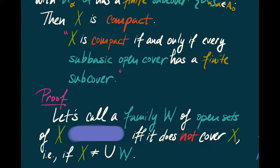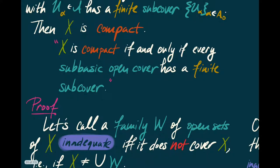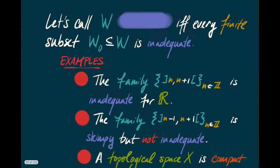We need a couple of words to make our argument clear. We'll call a family of open sets of X inadequate if it fails to cover X. There are other families we also need to contemplate — we'll call these skimpy. These are the families of open sets where every finite subset of them is inadequate. So if W is a finite collection of open sets, it's skimpy if and only if it's inadequate.